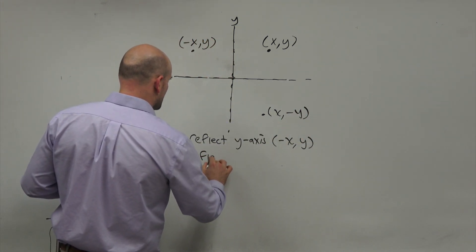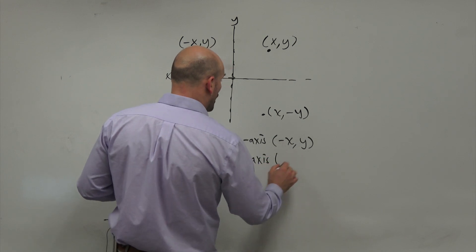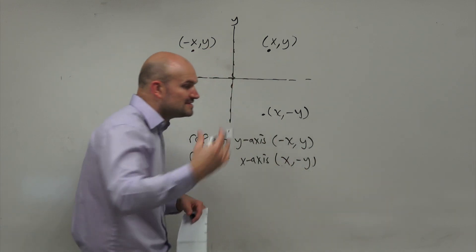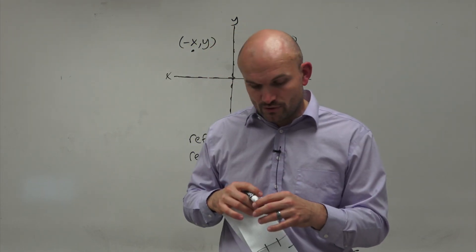So if I want to reflect the X axis, and again, this is for any point, all you're simply going to do is negate the Y. It doesn't have to be in the first quadrant. It can be in any quadrant, but that's going to be the rule that you're going to follow.